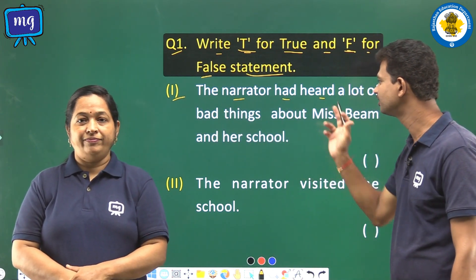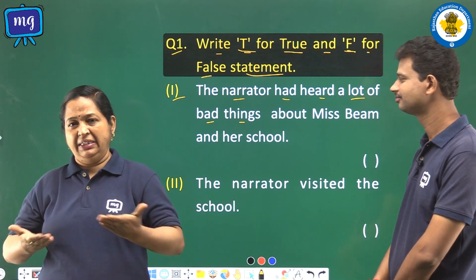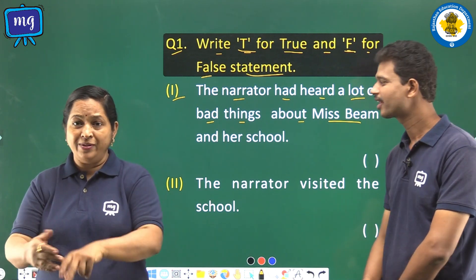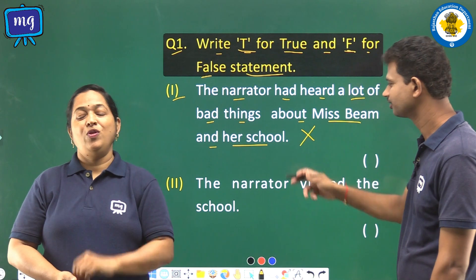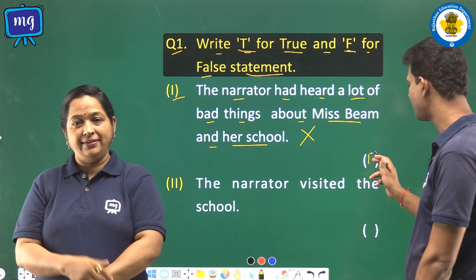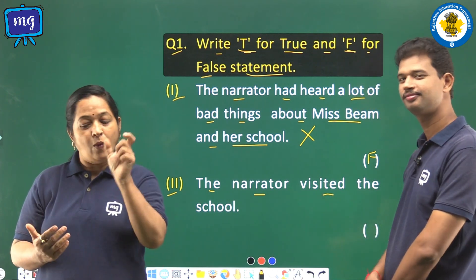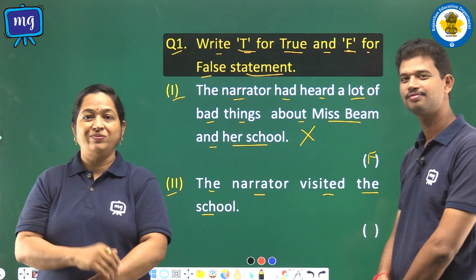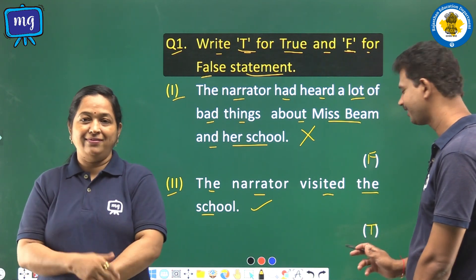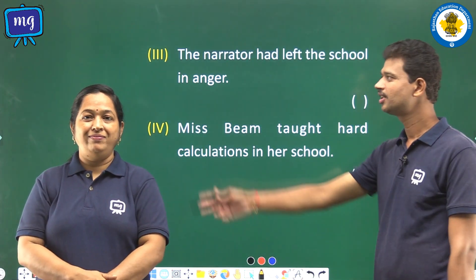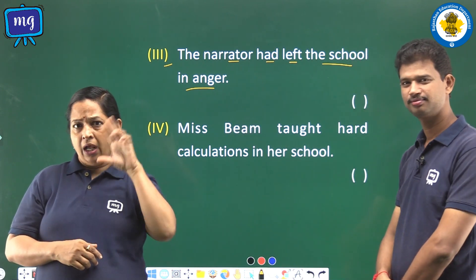First statement: the narrator had heard a lot of bad things about Miss Beam and her school. Is it correct? No, it's wrong, so we shall write F in the bracket. Second: the narrator visited the school. Is it correct? Yes, it's correct, so we shall write T in the bracket.